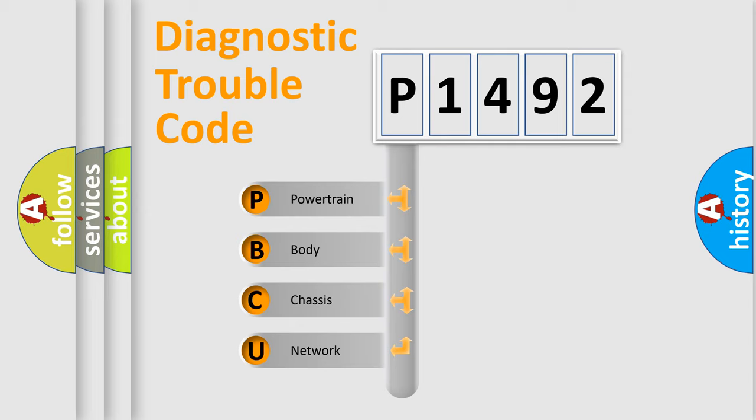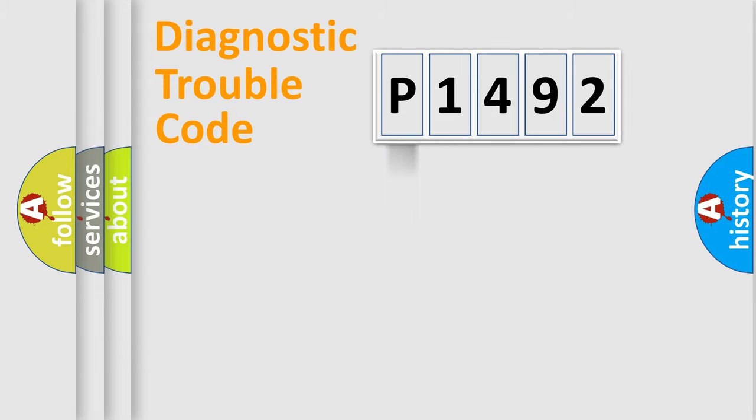We divide the electric system of automobile into four basic units: powertrain, body, chassis, network. This distribution is defined in the first character code.